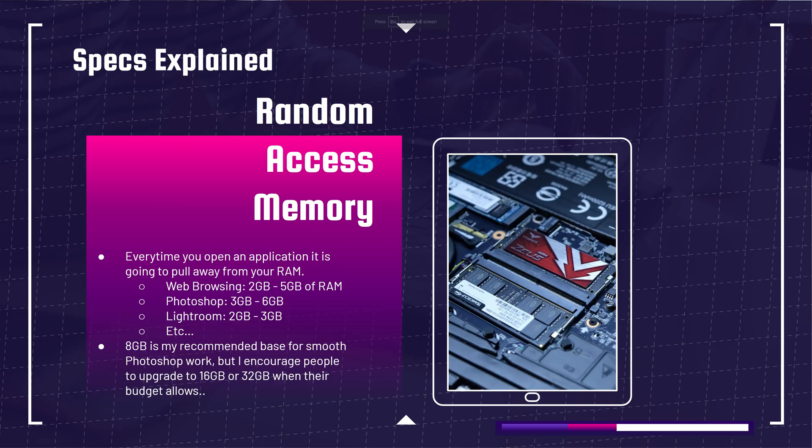First and foremost, for a basic definition just to get us all on the same page: RAM stands for random access memory, and it's used by your computer every time you open a program. So let's say you open Google Chrome — it's going to pull from that RAM memory. If you have 8, 16, or 32 gigs, it's going to take two to five gigs of RAM depending on how many tabs you have open.